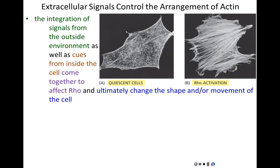This involves the integration of signals from the outside environment. Many different signals arrive at the cell membrane through receptors from the outside environment. All of those signals need to be integrated — much like signals for transcription were integrated by mediator — combined with cues coming from inside the cell. Intracellular cues revolve around cell health, energy levels, and how close we are to the next round of cell division. These extracellular and intracellular cues integrate together and ultimately affect Rho. If Rho becomes active, the cell will crawl; if Rho does not activate, the cell will not crawl.